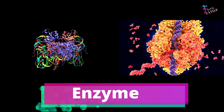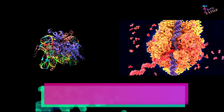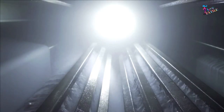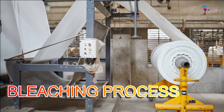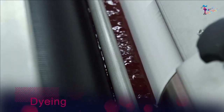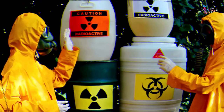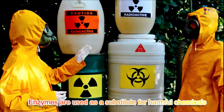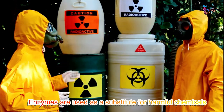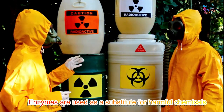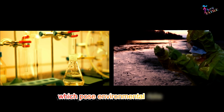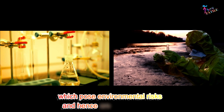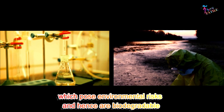Enzyme. Enzymes are safely used in textile processes like desizing, scouring, bleaching, dyeing, and finishing. Moreover, enzymes are used as a substitute for harmful chemicals which pose environmental risk, and hence they are biodegradable.